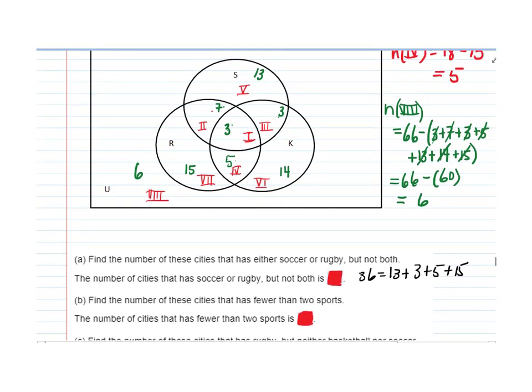Alright, find the number of these cities that has fewer than two sports. Okay, so any city that's in any overlap of any of the sets is going to have at least two sports. The cities that have only one sport would be the cities that have in region 5, region 6, and region 7.